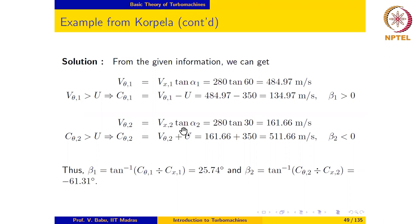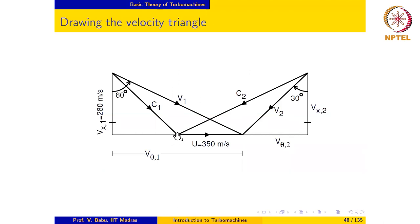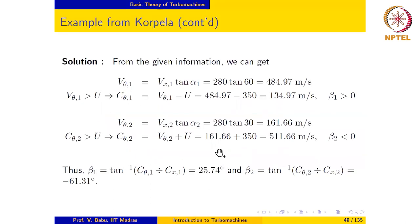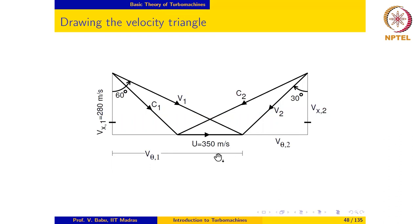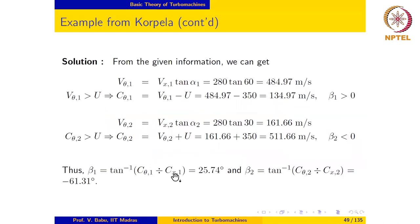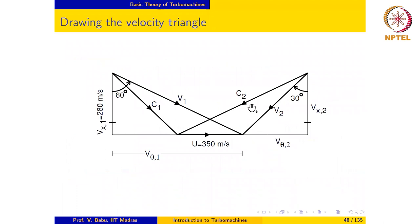In a similar manner, v_theta2 at the outlet is evaluated as v_x2 times tan(alpha2). Since c_theta2 is greater than u, v_theta2 is known, so c_theta2 equals v_theta2 plus u, giving c_theta2 as 511.66. We also note that beta2 is less than zero since c2 is in a clockwise direction from the reference.